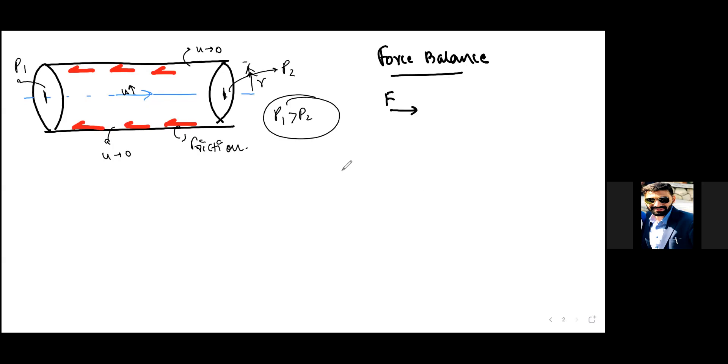What is the force acting on the right direction? Force acting on the right direction will be equal to force acting on the left direction. Force acting on the right direction is basically due to this differential p1 minus p2 multiplied by pi r squared which is the area of this cross section.